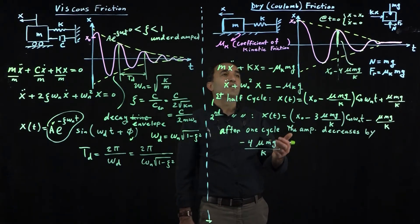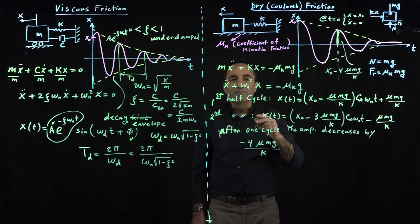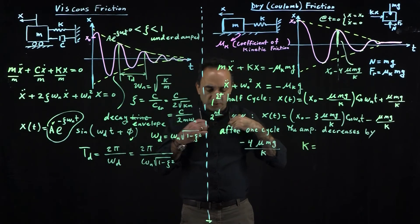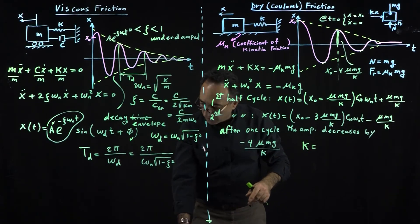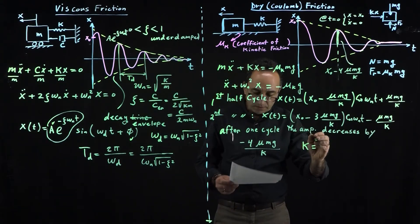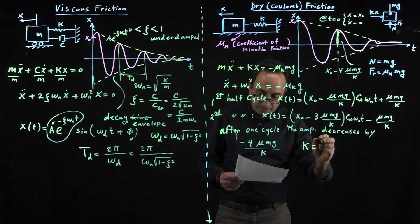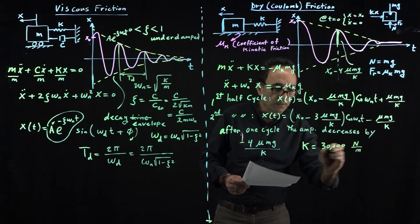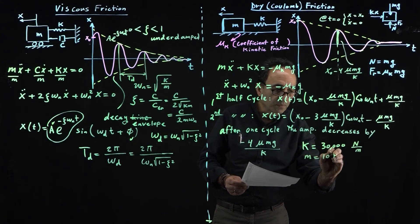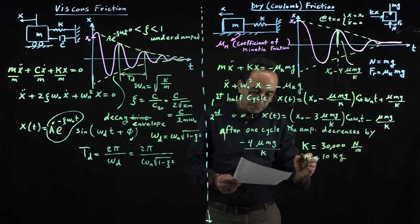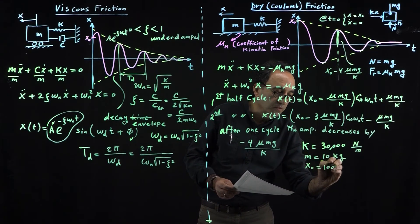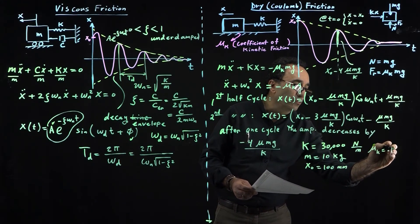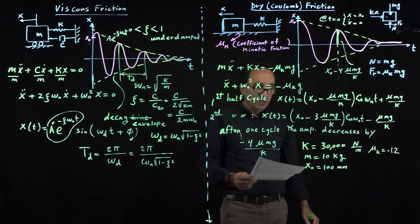Now what I want to show you is one quick example. Let's put some numbers here. If we say we have a system exactly as you see here in the picture, if k equals 30,000 newtons per meter, and let's say mass is 10 kilograms, and you give it an initial displacement of 100 millimeters.